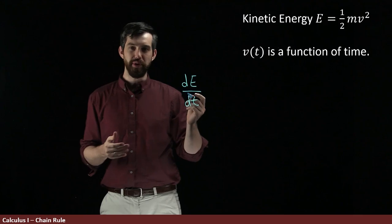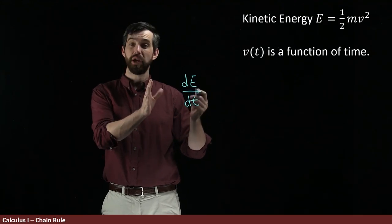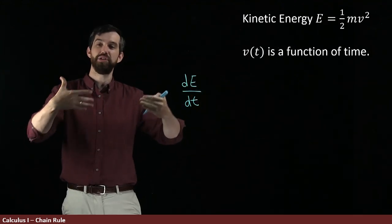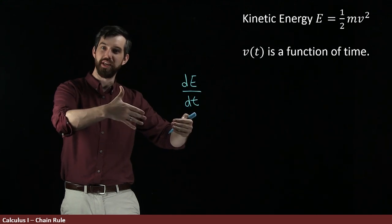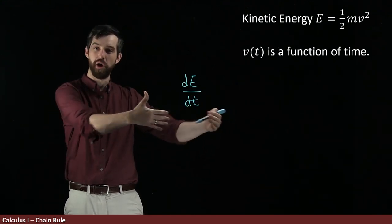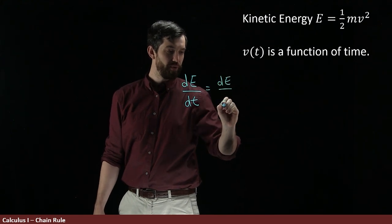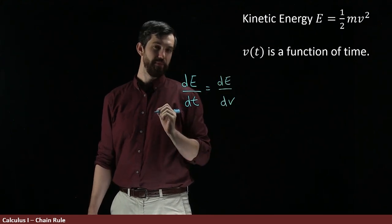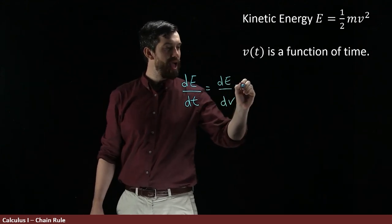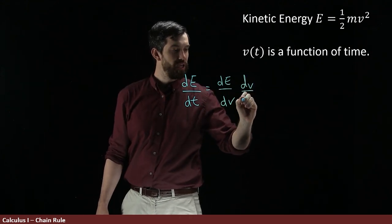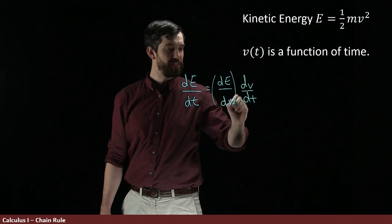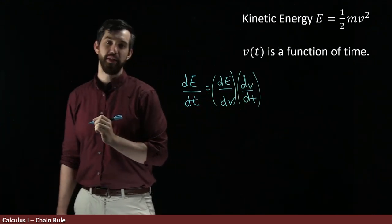So what I'm going to do is apply chain rule to this composition. The energy depends on the velocity and the velocity depends on the time. I have a composition. And so I'm going to say by chain rule that this is the change in energy with respect to the velocity, and then I have to multiply by the change in the velocity with respect to time. And I have this particular product that gives me the chain rule.